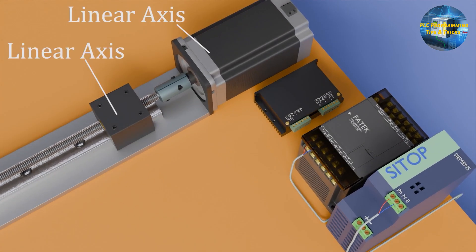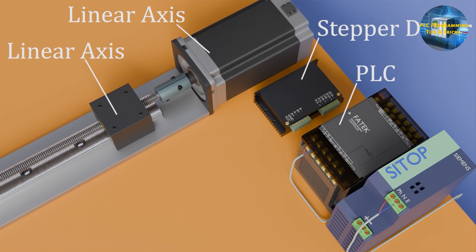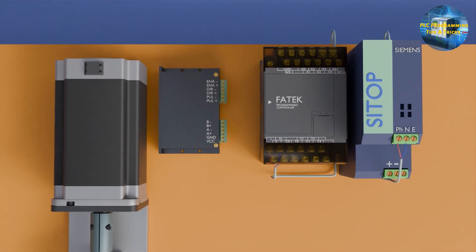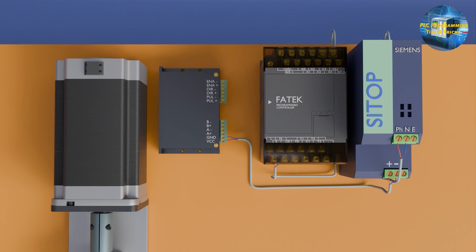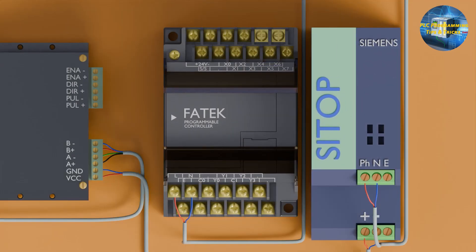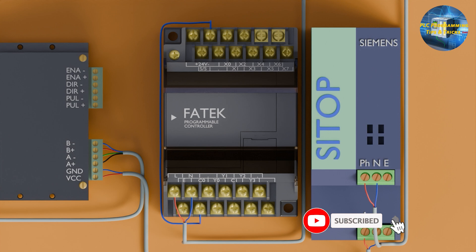We have a linear axis with a stepper motor, a stepper driver to control the stepper motor, and a Fatech PLC. First we will connect the 24V DC power supply lines to the stepper driver. Next, we will connect the stepper motor wires to the driver — please refer to the wiring diagram before connecting. Then we will connect the negative terminal of the 24V output of the PLC to the common terminal for the outputs, as we are going to send negative voltage signals or pulses to the stepper driver.